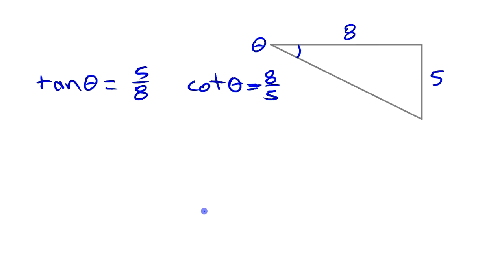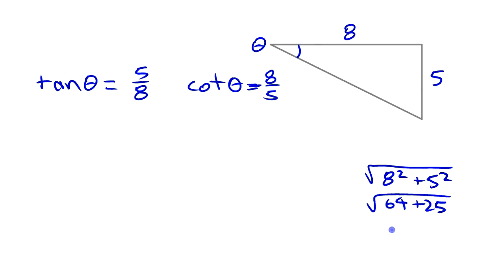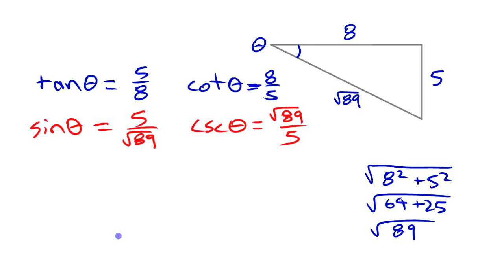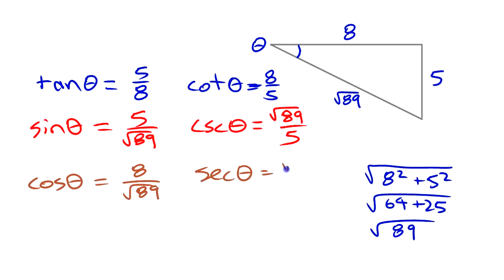If we want the other four trig ratios, we need to find the hypotenuse, which is the square root of eight squared plus five squared — that's the square root of 64 plus 25, or the square root of 89. So sine of theta is five over root 89, and cosecant is just root 89 over five. Cosine is adjacent over hypotenuse: eight over root 89, and secant is root 89 over eight — its reciprocal.